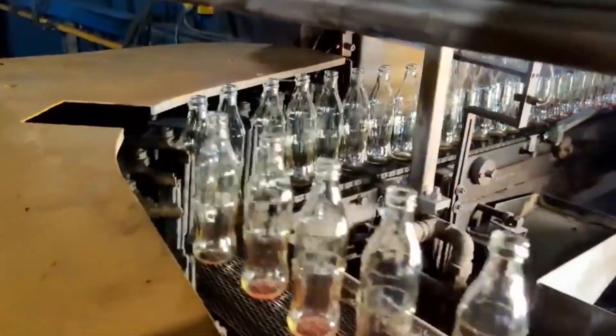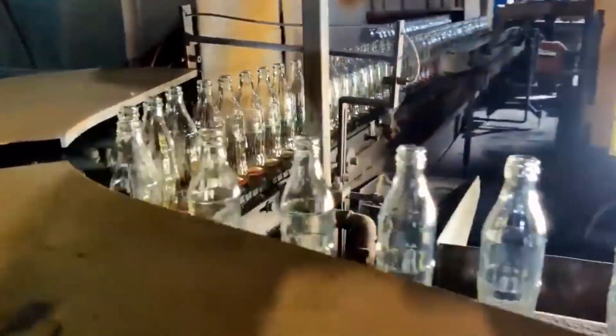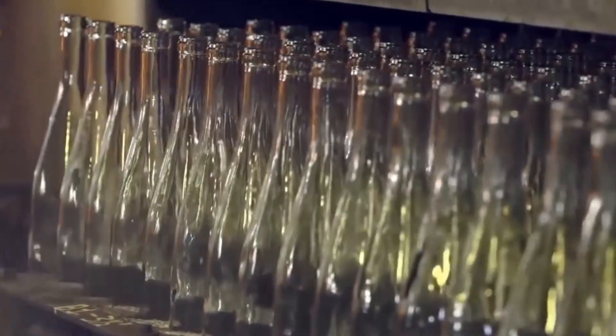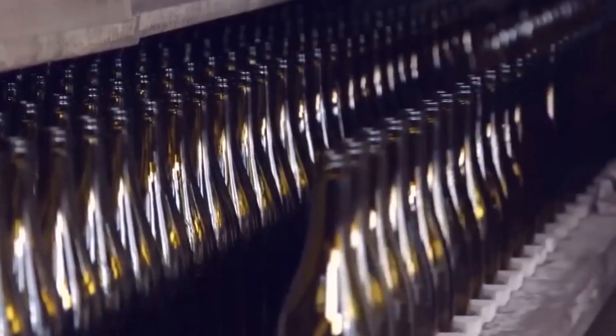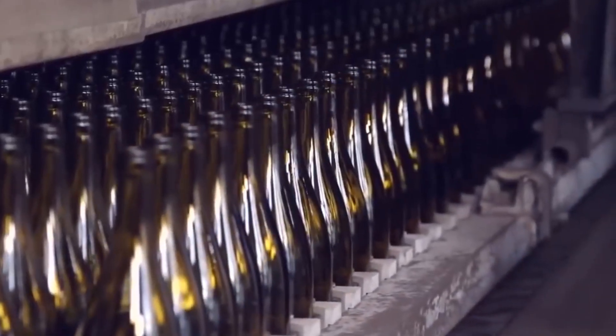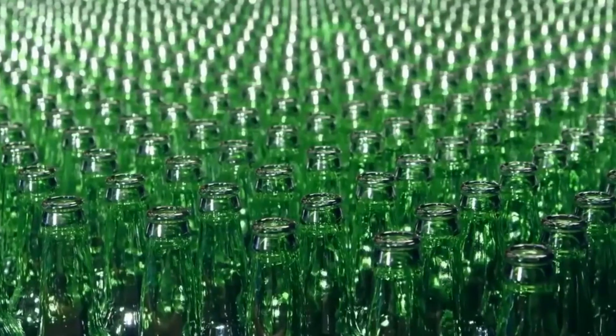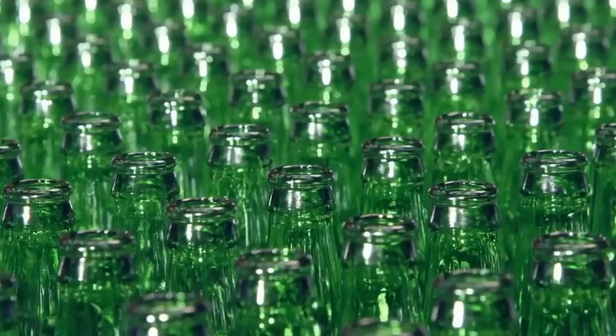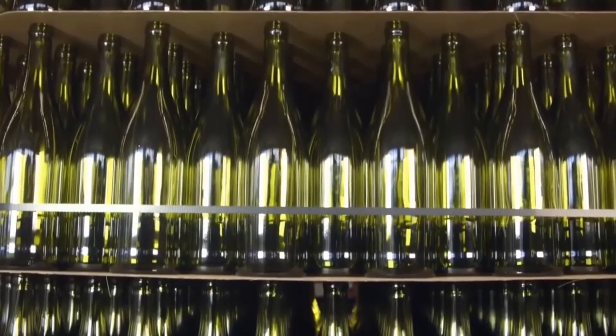Throughout the cooling and annealing process, rigorous quality control measures are implemented. Skilled inspectors carefully examine the bottles, ensuring that each one meets the highest standards of quality and integrity. As the bottles complete the cooling and annealing stages, they emerge with a newfound strength and resilience. Their journey from molten liquid to solid containers is now complete, ready to hold our favorite beverages and products.